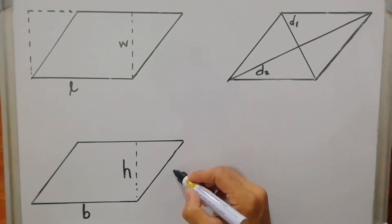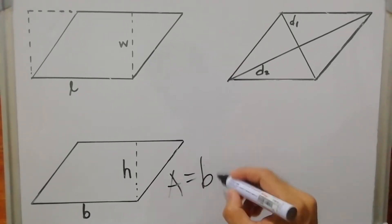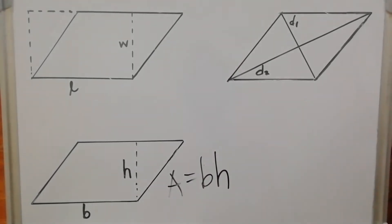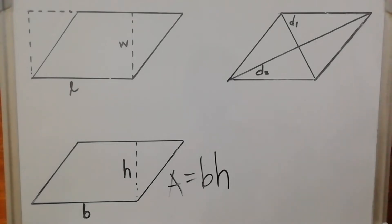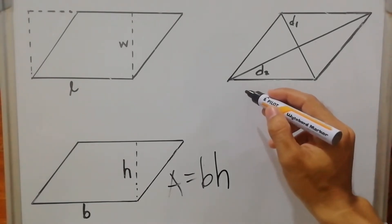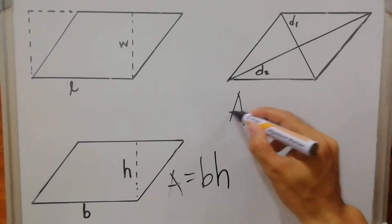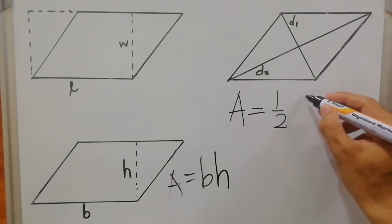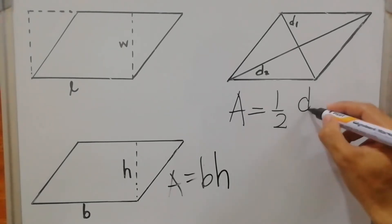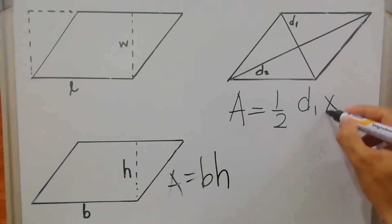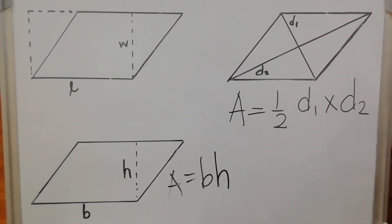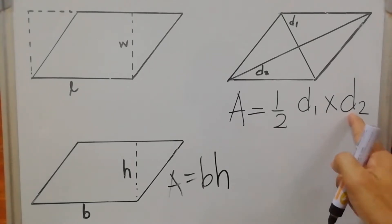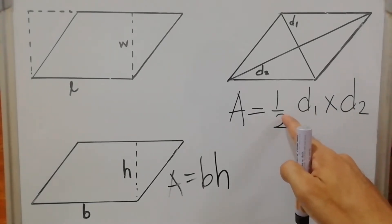The area formula is A = base × height. If the given values are the diagonals of the parallelogram, the formula for the area is A = ½ × first diagonal × second diagonal. Multiply the first and second diagonal together, then multiply by one-half, or divide by two.